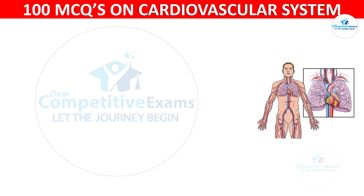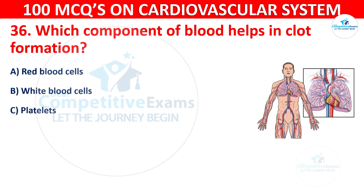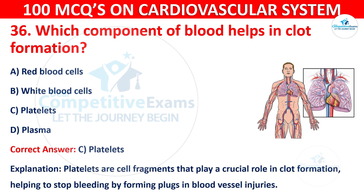Question 36: Which component of blood helps in clot formation? Options are: Red blood cells, White blood cells, Platelets, or Plasma. The correct answer is C, Platelets. Platelets are cell fragments that play a crucial role in clot formation, helping to stop bleeding by forming plugs in blood vessel injuries.